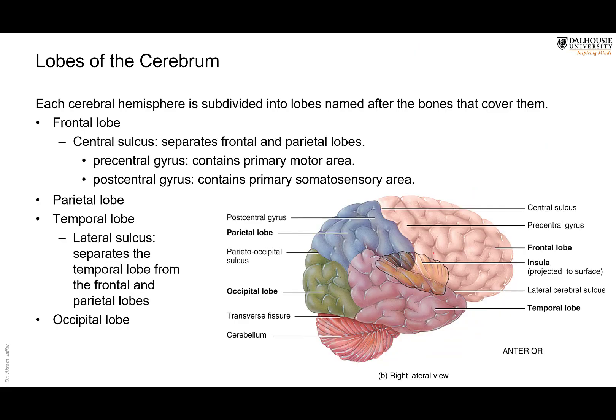For descriptive purposes, we divide the cerebrum into lobes. These lobes, fortunately, have the same names as the bones of the skull. So we have the frontal lobe, the parietal lobe, the occipital lobe, and the temporal lobe — as you can see here.